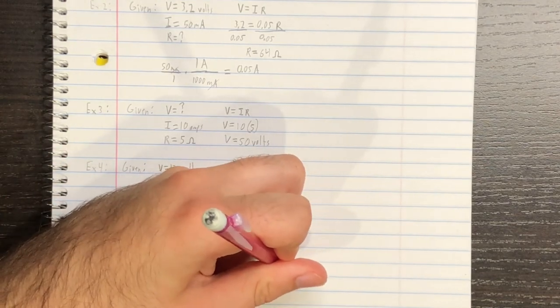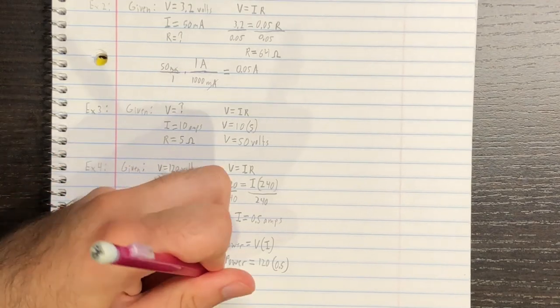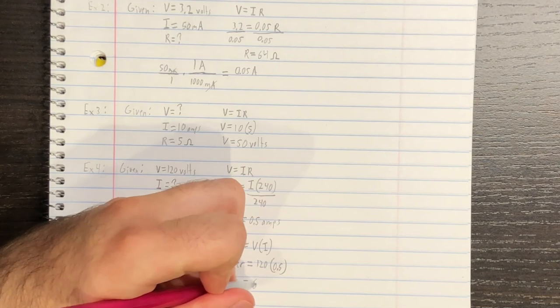So, we're going to write this off to the side here. And multiplying these two together, we get that the power of the bulb will be 60 watts.